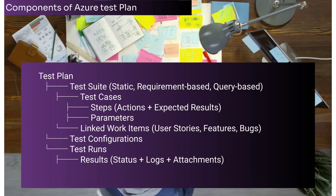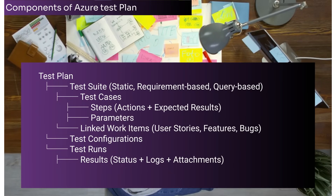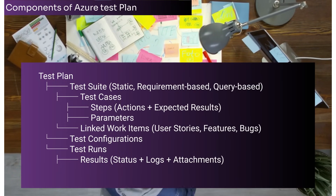Test Results represent the status of execution with attachments such as screenshots. Relationships and links — or work item integration — include test cases linked to user stories, features or bugs in Azure Boards, and requirement-based test suites that automatically pull test cases linked to specific work items.